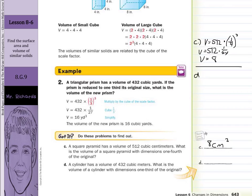And then we can take a look at D. A cylinder has a volume of 432 cubic meters. What is the volume of a cylinder with dimensions one-third of the original? Well, once again, volume equals 432 times our scale factor, one-third cubed. So volume is going to equal 432 times 1 cubed is 1, 3 cubed is 27. And when you multiply these numbers together, you are going to end up with 16.